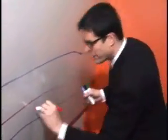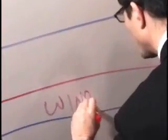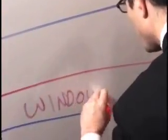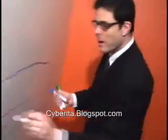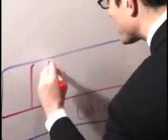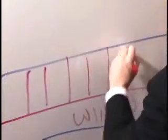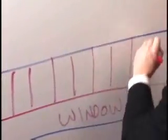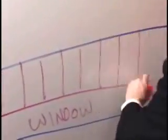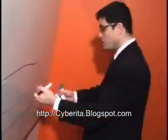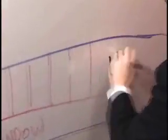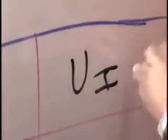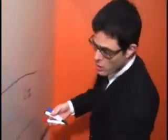Here's your computer, and it's running an operating system like Windows. Now operating systems are really nothing more than a collection of APIs, or application programming interfaces, that developers use to build their applications. It's also a user interface — for example, the keyboard and the mouse that you use to get at the different applications.